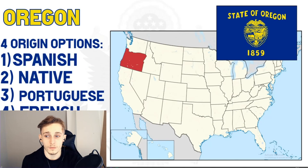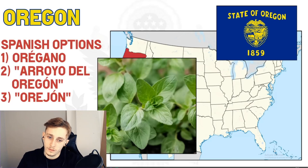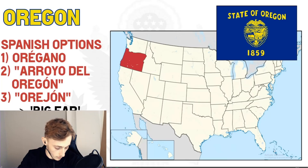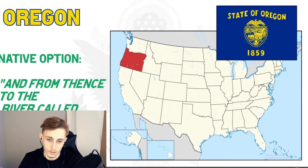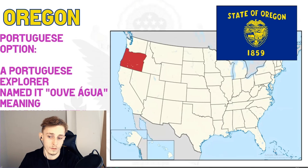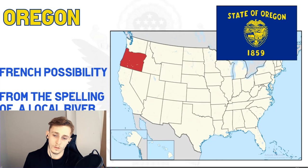Further north is Oregon, whose name origin is disputed and unknown. There are four options: Spanish, native, Portuguese, or French origin. The Spanish could have named it after the word 'oregano,' after a stream in Spain called 'Arroyo del Oregón,' or after 'orejon' meaning 'big ear.' A 1765 petition referenced 'the river called by the Indians Oregon.' In 1904 a magazine argued it came from a Portuguese explorer naming it 'Ouvir Água' meaning 'hearing water,' which then became Oregon — that one seems like a stretch. The French option involves the spelling of a local river as 'Ouaricon.'